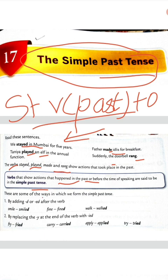These are some of the ways in which we form the simple past tense. Rule one: इनको D और ED लगाके बनाएंगे। जैसे smile का past tense होगा smiled। Walk का walked। Find का found।